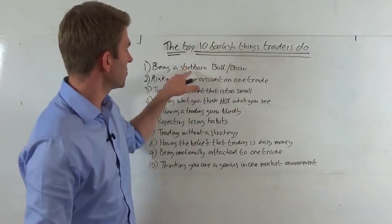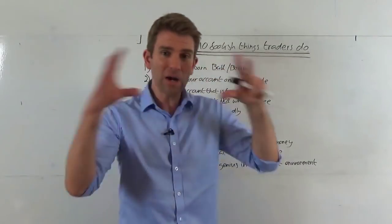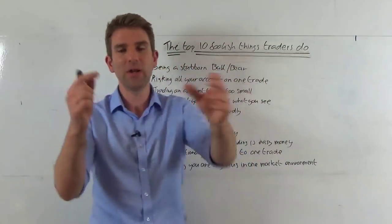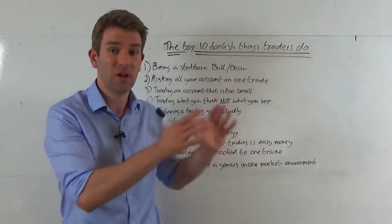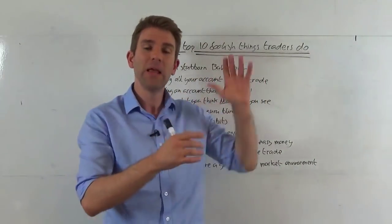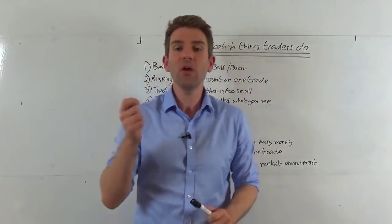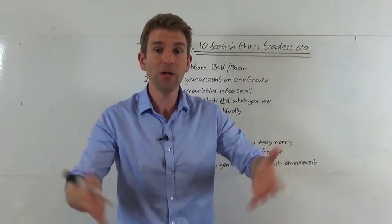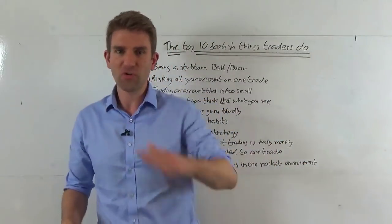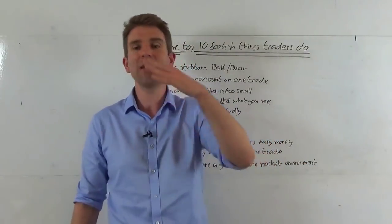Number one: being a stubborn bull or bear. I'm going to broaden this out because I see this quite a lot. There's a fine line between a lot of these things. Being a stubborn bull or bear means, listen, we are in a bull market. The market's been going up for the past however many years. It's been chugging up. We've got a trending uptrend chart on a daily, a weekly, a monthly. Everything is uptrending and you are bearish.